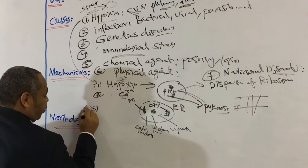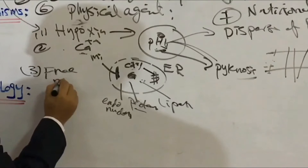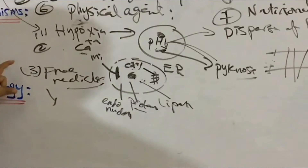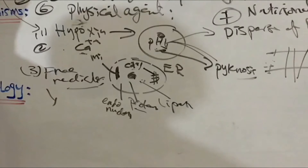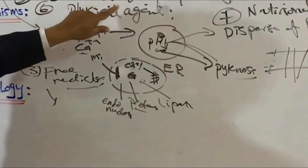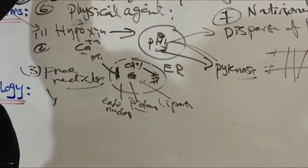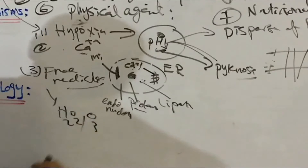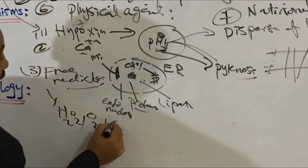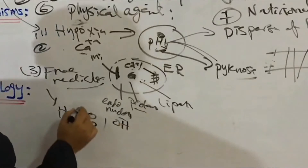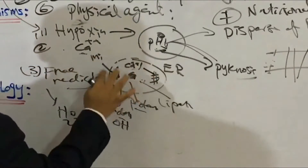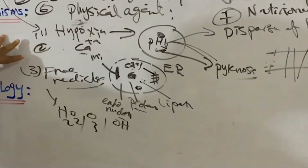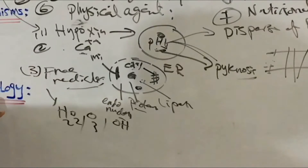The third mechanism is the formation of free radicals. These are formed as a result of stress, especially severe stress, chemical agent poisoning, toxins, and sometimes hypoxia. Free radicals such as hydrogen peroxide, superoxide, and hydroxyl groups destroy cellular membranes as well as organelle membranes inside the cell.